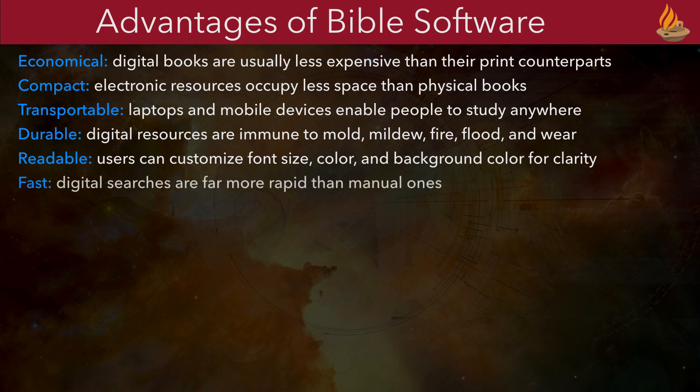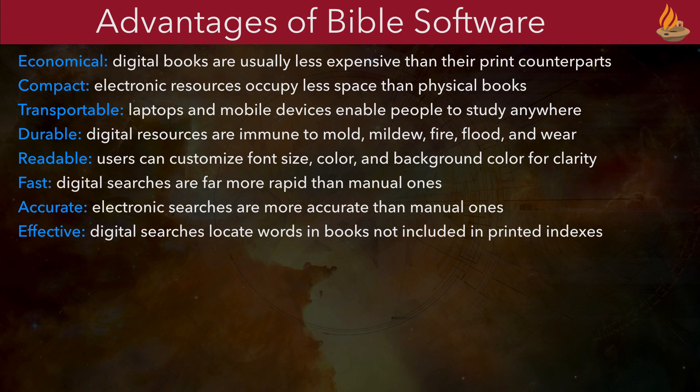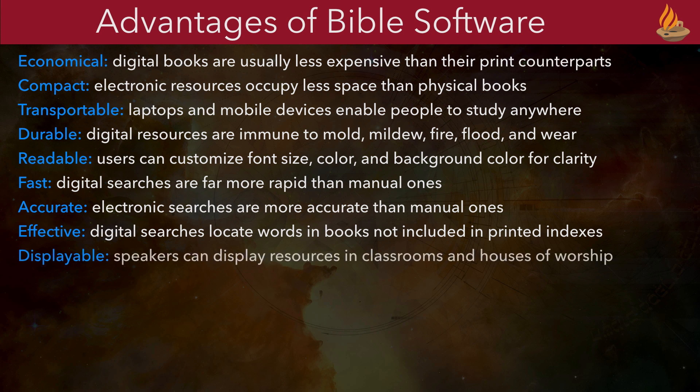Sixth, fast — digital searches are far more rapid than manual ones. Seventh, accurate — electronic searches are more accurate than manual ones. Eighth, effective — digital searches locate words and books not included in printed indexes. Ninth, displayable — speakers can display resources in classrooms and houses of worship.